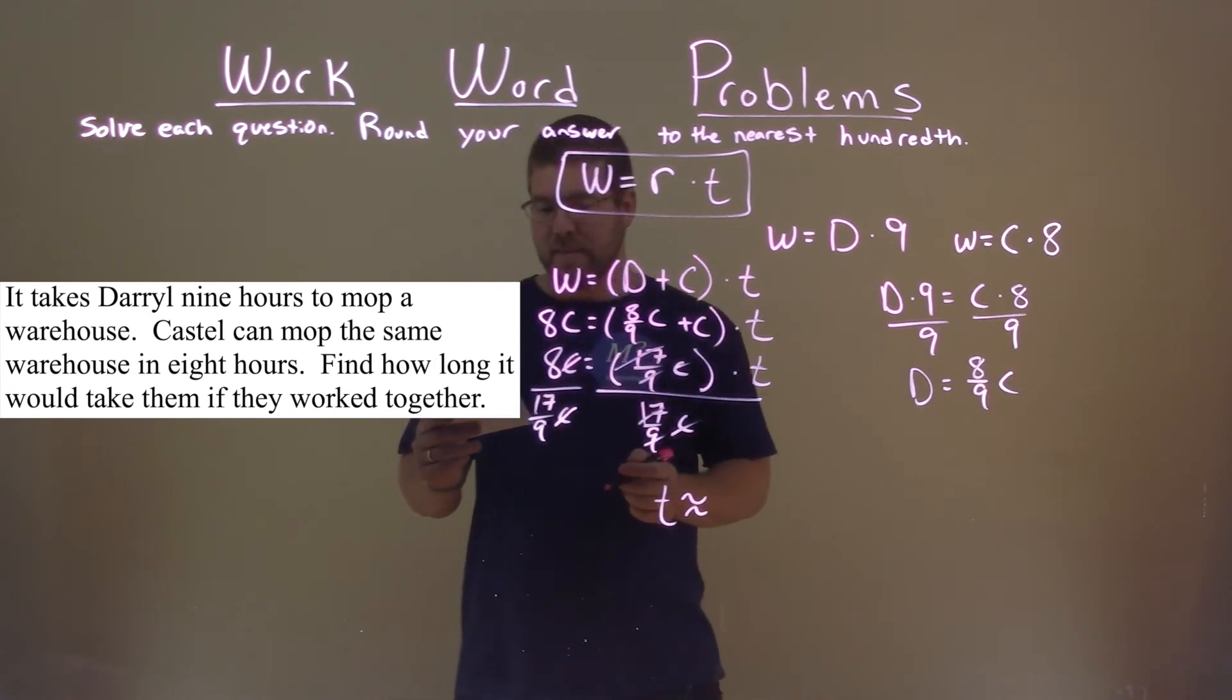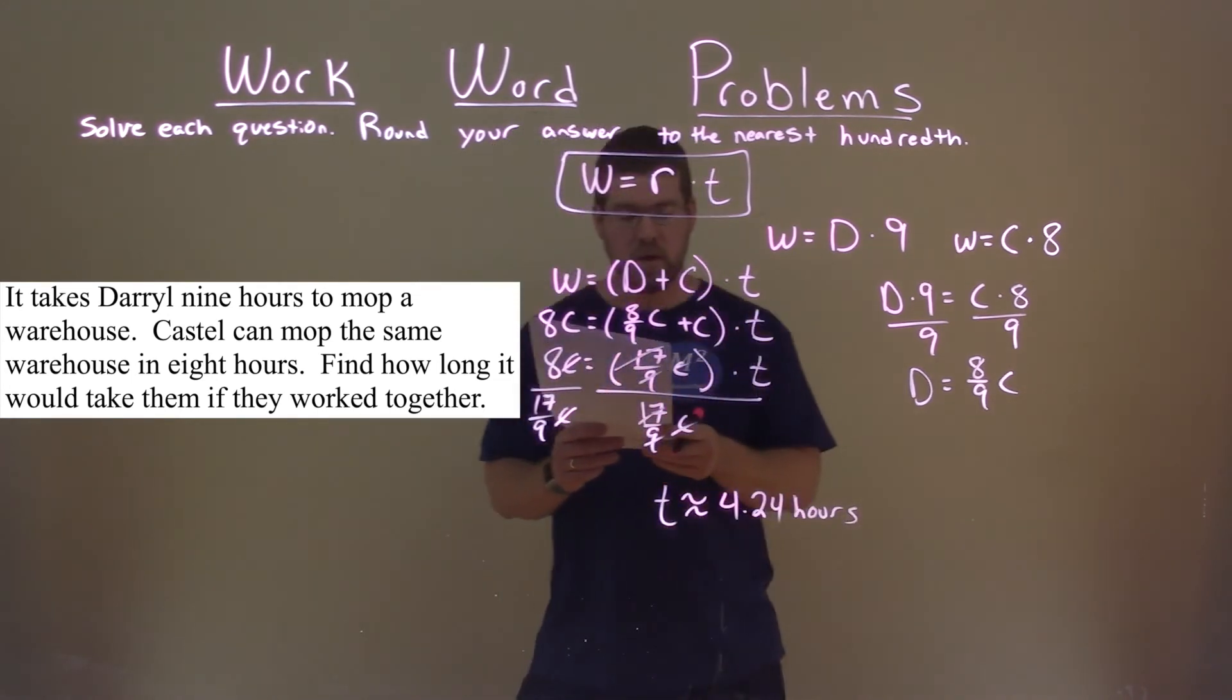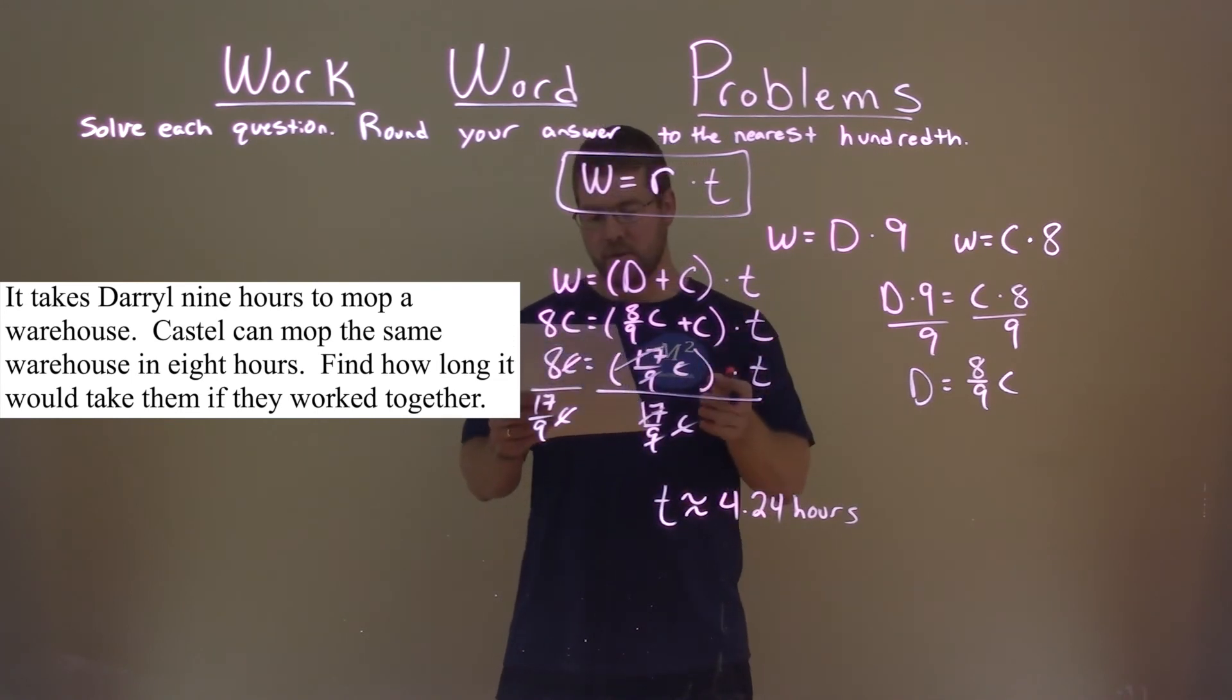Eight divided by seventeen ninths is approximately four point two four hours. So, that is about how long it would take them if they worked together to mop the warehouse.